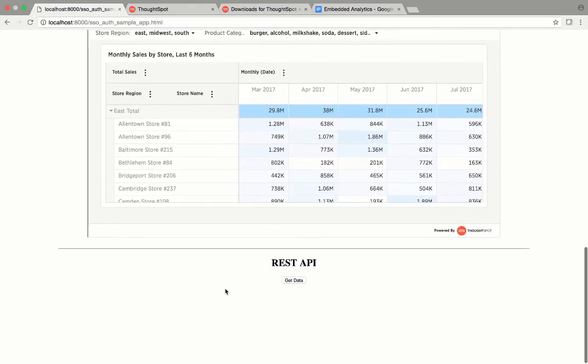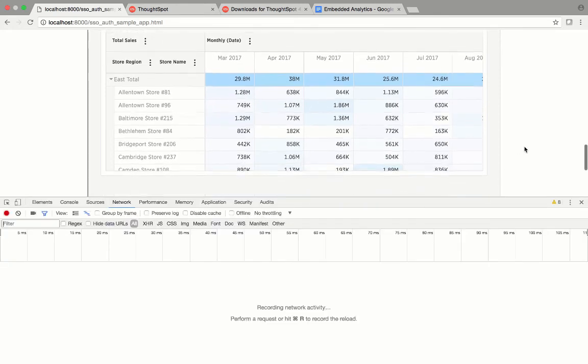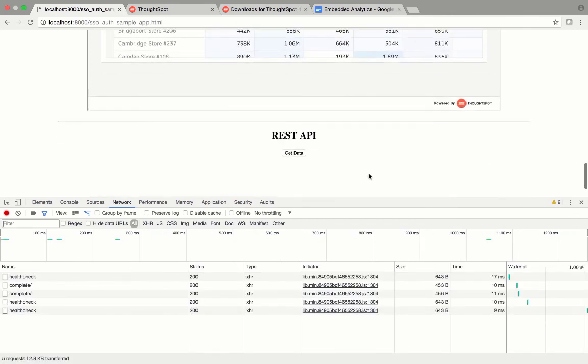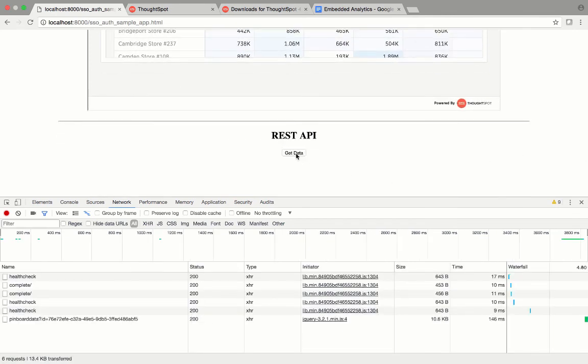And the final way, of course, is to use our REST APIs. For this, I've just built out an AJAX call using our JSON library. So, I'm going to show that to you now. I can click the Get Data button.